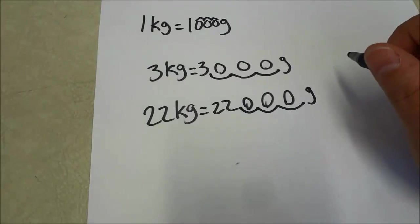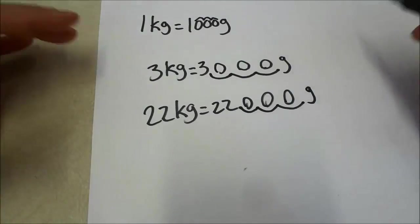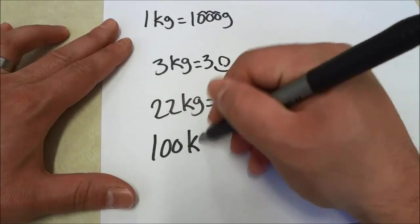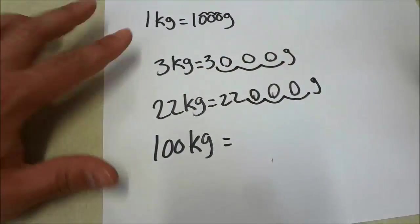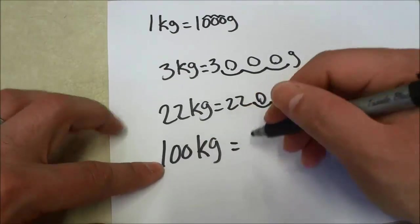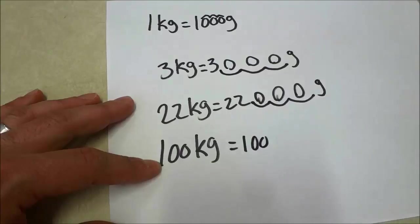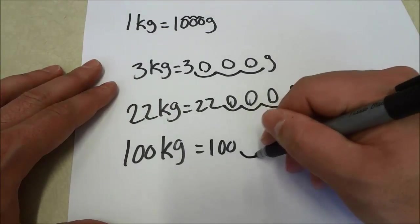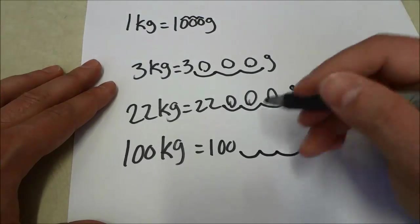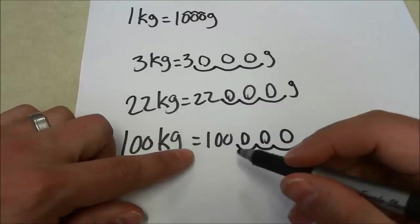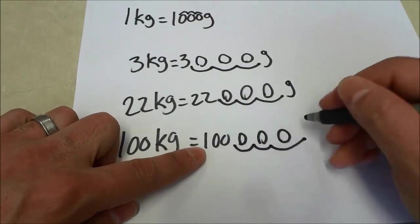We'll go over one more example with a bigger number. So let's say that we had 100 kilograms and we are going to figure out how many grams that is equal to. We're going to take the 100 that we see right there. We are going to take the imaginary decimal and move it three spaces to the right. One, two, three. Fill those spaces in with zeros just like that. And you can see that we have 100,000 grams.